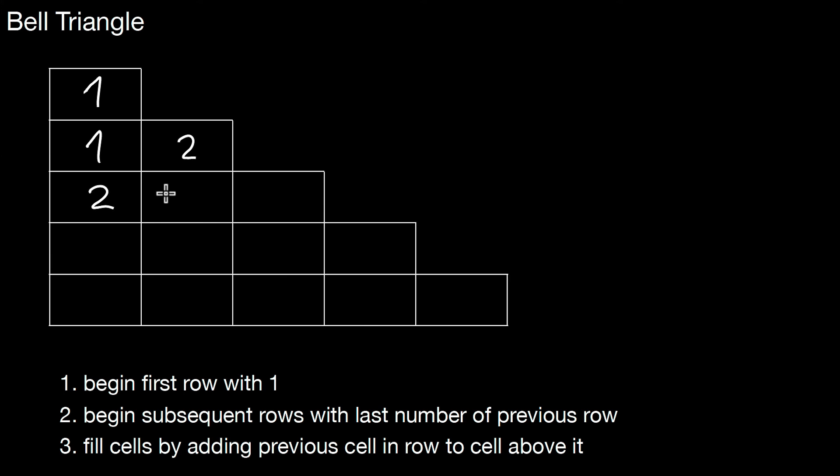Now this number is computed by adding those numbers. 1 plus 2 is 3. This is computed by adding those numbers. That is 5. That's the last number. Let's write it down here again. This number is computed by adding up those. That's 7. This number is computed by adding those. Then we got adding those as 15. And so forth. Write it down here. 15.